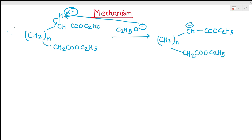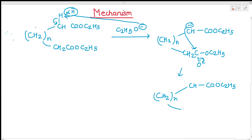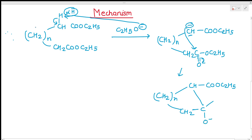This enolate anion then attacks the carbonyl carbon of the other ester group intramolecularly. There is bond formation between the carbanion carbon and the ester carbonyl carbon. We get an intermediate with O⁻ and OC₂H₅ on the tetrahedral carbon. In the next step, the negative charge causes elimination and the OC₂H₅⁻ group leaves.